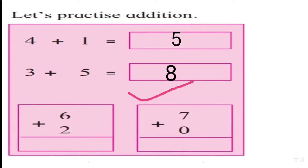We have to add seven and zero. First we will draw seven lines: one, two, three, four, five, six, seven. We have to add zero, so we draw nothing here because zero means nothing. So when we add seven and zero, the answer will be seven.